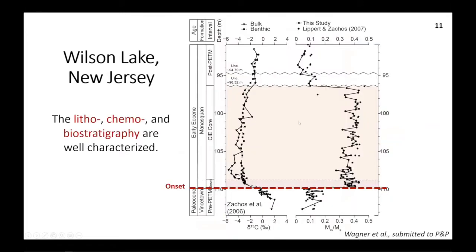Here's the stratigraphy of Wilson Lake. I've highlighted the PETM with a pale pink background, and the onset of the PETM is marked by a red dashed line. The PETM at Wilson Lake is cut off by an unconformity at the top of the core. Coincident with the PETM is a negative carbon isotope excursion seen in stable carbon isotopes from planktonic foraminifera. Also coincident with the PETM onset is a stepwise increase in bulk magnetic parameters — here I'm showing magnetic squareness. Previous studies have characterized these bulk magnetic properties and attributed them to large abundances of magnetofossils.